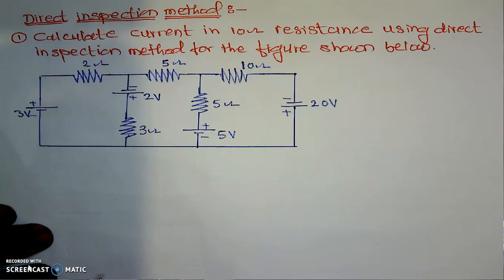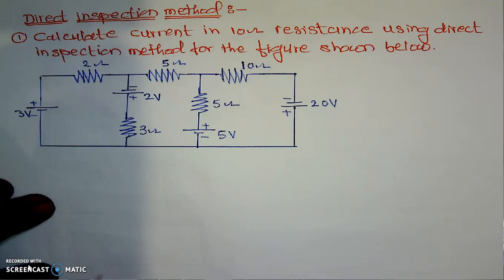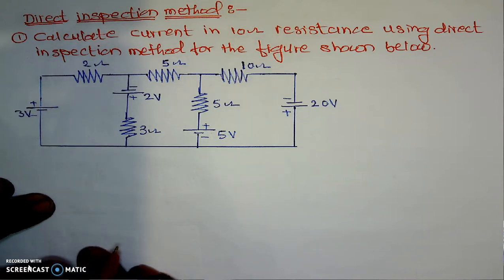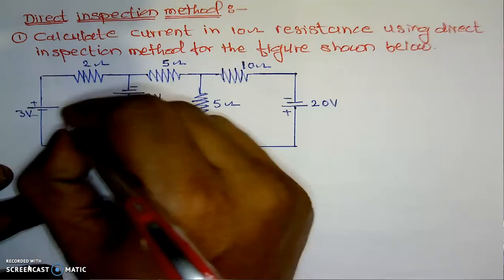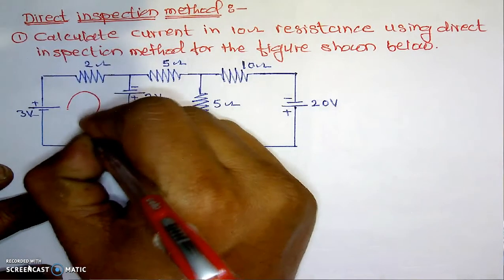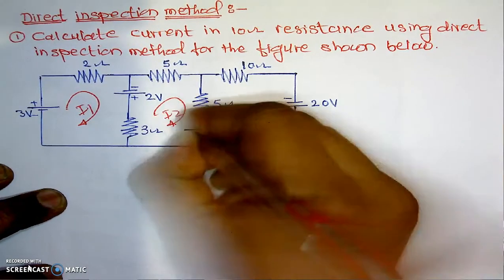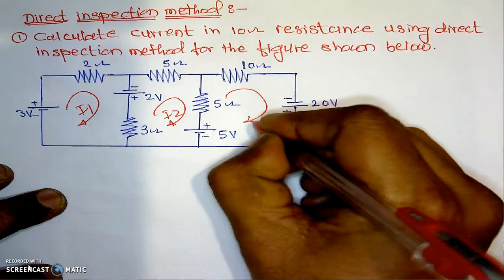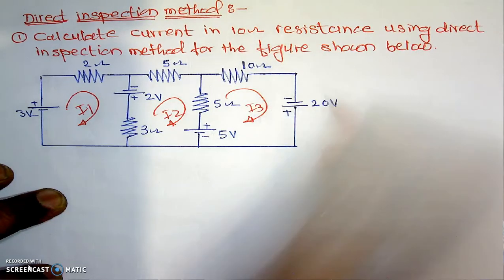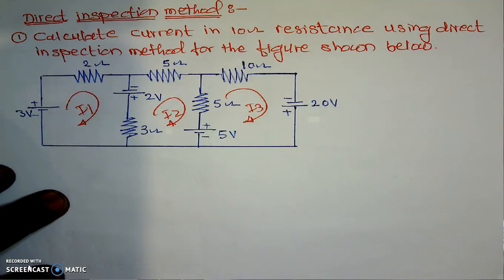Before that, we will try to understand this particular method. It is the extension of the mesh analysis, or it is a direct inspection for the mesh analysis. We will assume three separate currents for the three loops: I1 for loop one, I2 for the second loop, and I3 for the third loop. In a single step we are able to calculate the currents — that is why it is known as the direct inspection method.